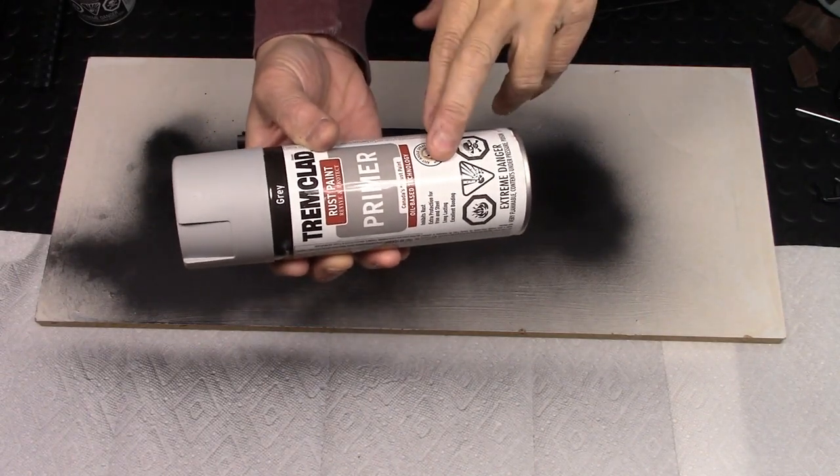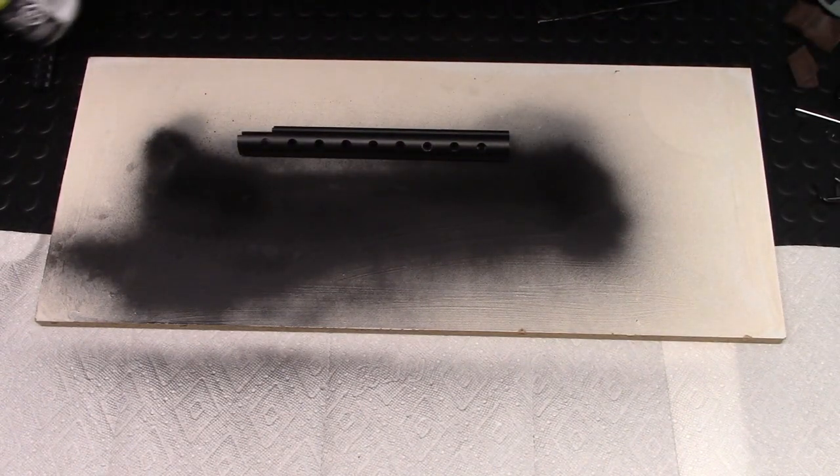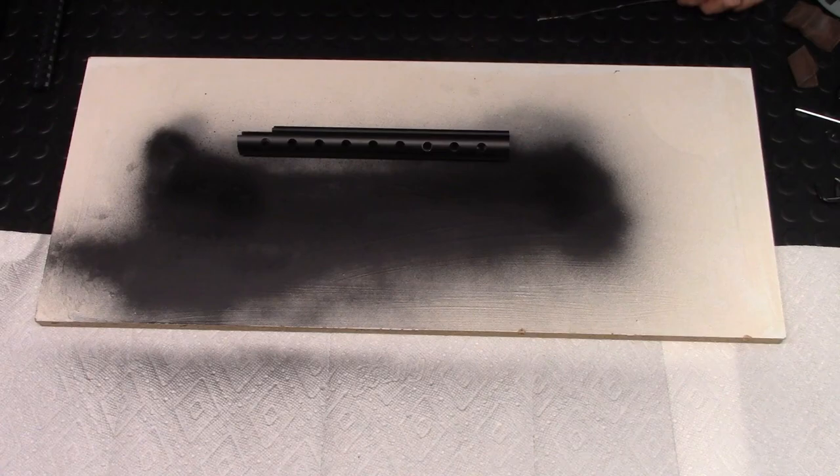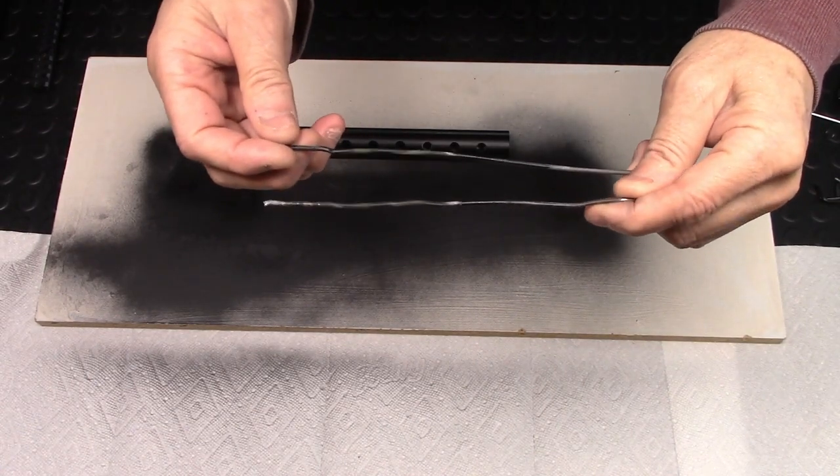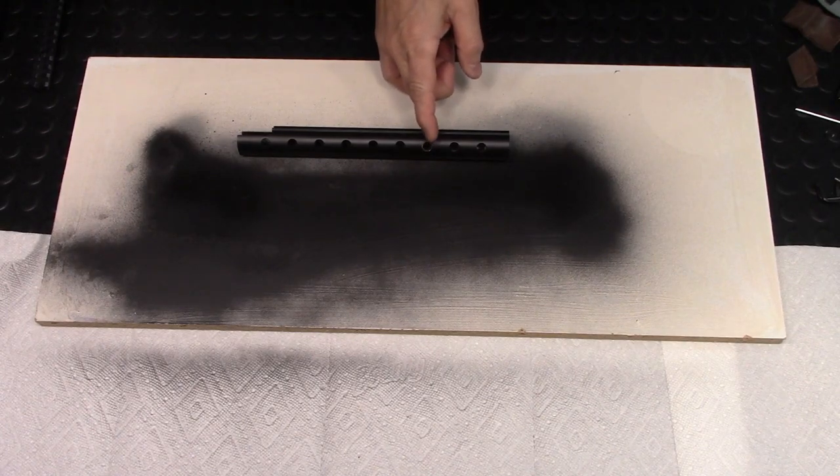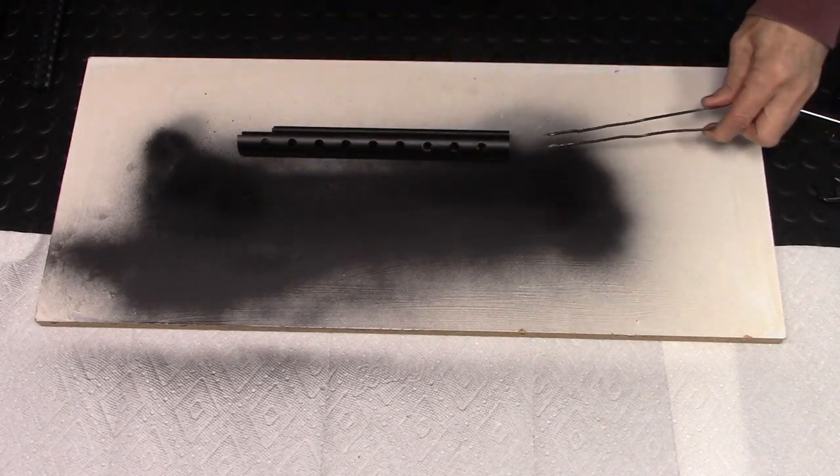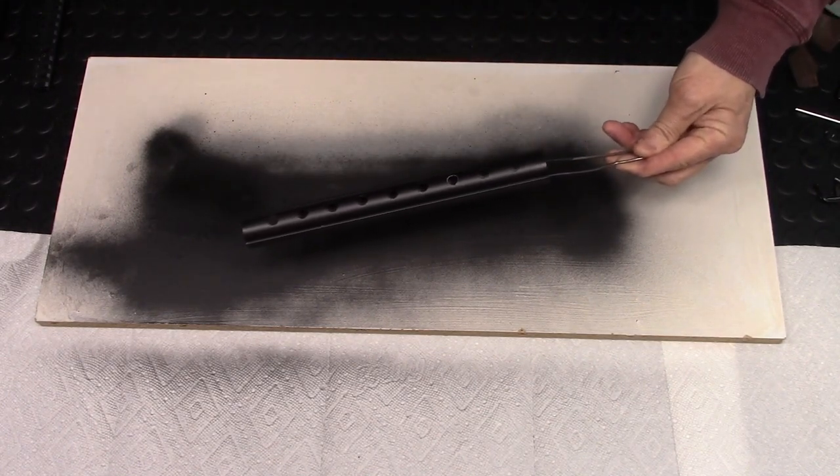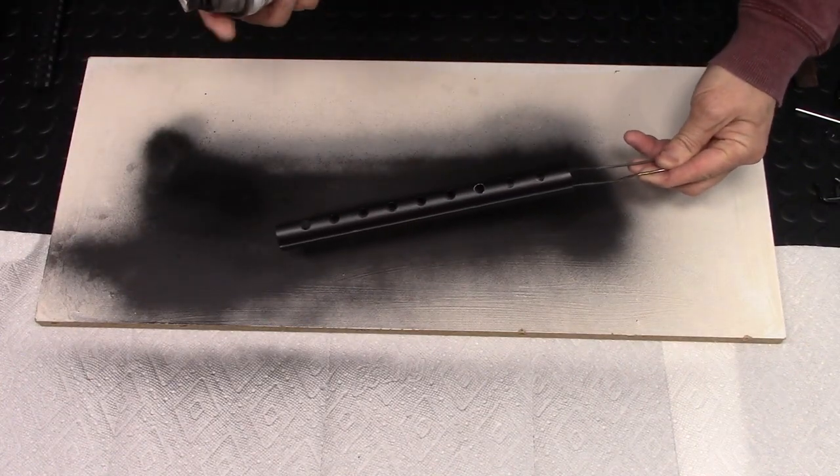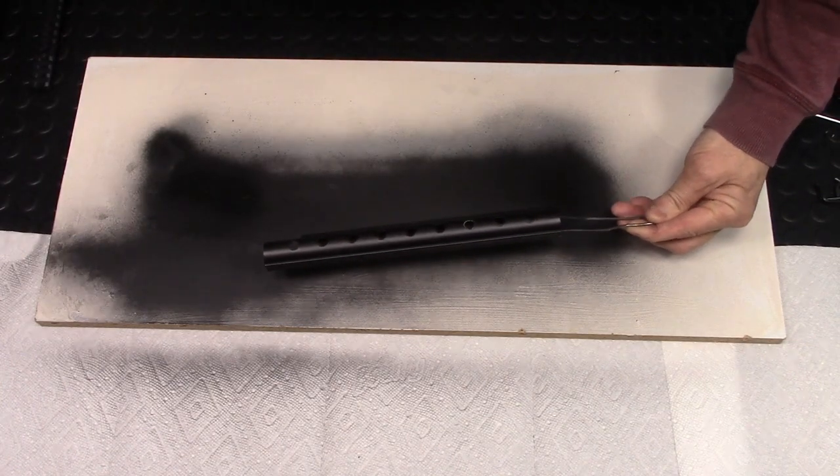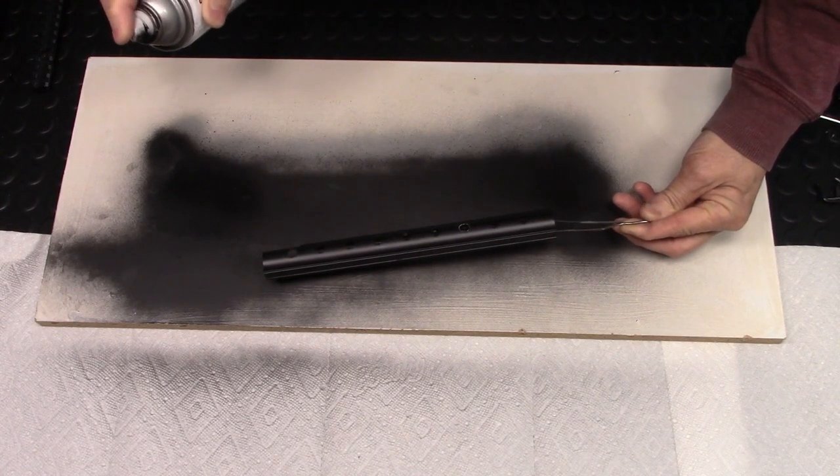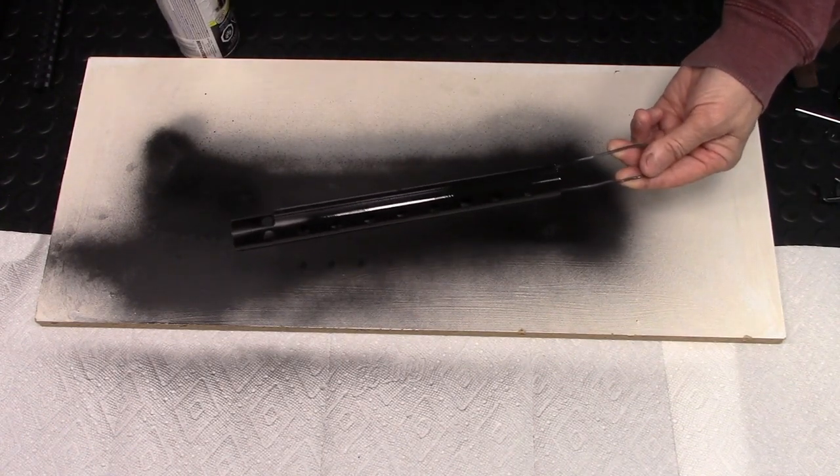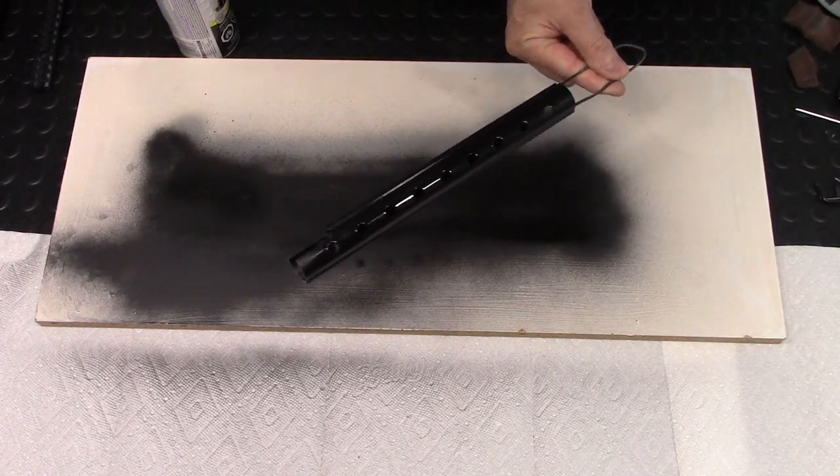After two coats of primer, let it sit overnight. And then I sprayed two coats of Rust-Oleum Flat Black. And one more note. When you make the coat hanger, do not put the hook. Because when it came through, it kind of ruined the edge. So just make it straight. And now I'm going to be doing the third coat. Shake it. Make about 12 inches from your item. And just spray it across.